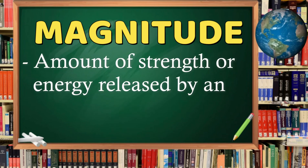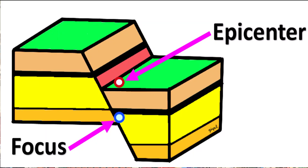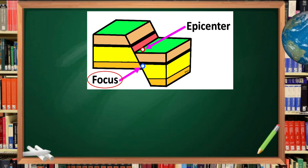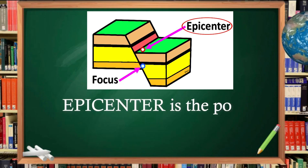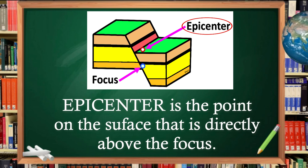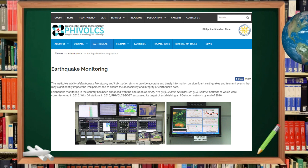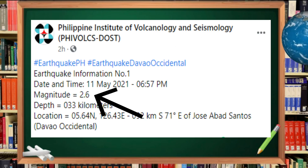Magnitude refers to the amount of strength or energy released by an earthquake at the focus. The focus is the point inside the earth where the earthquake started, sometimes called the hypocenter. And the point on the surface of the earth directly above the focus is called the epicenter. Magnitude is calculated from the earthquake recorded by an instrument called seismograph. Magnitude is represented by Arabic numbers.